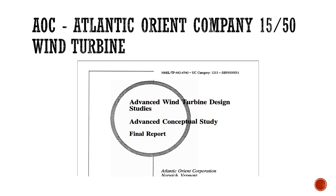Next on the list is the AOC — the Atlantic Orient Company 15-50 wind turbine system. This wind turbine system consists of 50 kW and 350 kW wind turbine systems, so they are smaller in size than the 5 MW wind turbine system. The documentation, including the technical reports, is available via the website link in the description where you can actually download the document.